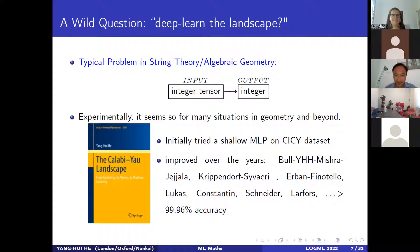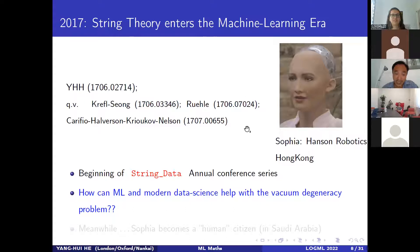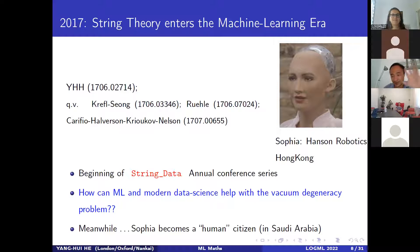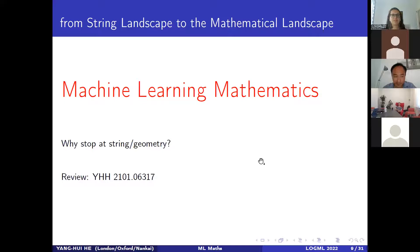A couple of friends in the string theory community were thinking along similar lines about applying machine learning techniques around the same time — without us talking to each other. So 2017 is when string theory entered the machine learning era, coincidentally the same year that Sophia became a human citizen in Saudi Arabia. This really got me thinking: why should we stop at geometry? Why stop at string theory? What problems in mathematics can be addressed this way?